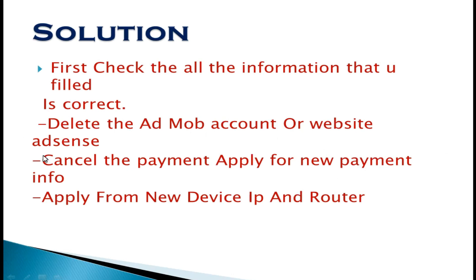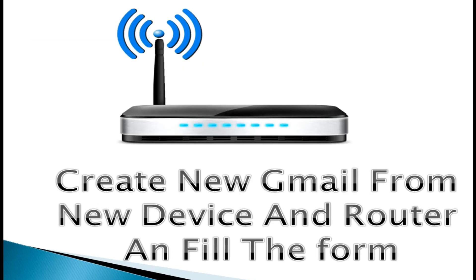Cancel the current payment method and apply for a new payment method using a new IP address, new device, and new router. If you repeat the same steps from the same router, AdSense will detect your IP address and block you again, which could delay your fix by six months, one year, or even two years. Create a new Gmail from a new device and router, fill out the form, and you will be able to fix this Step 2 error.